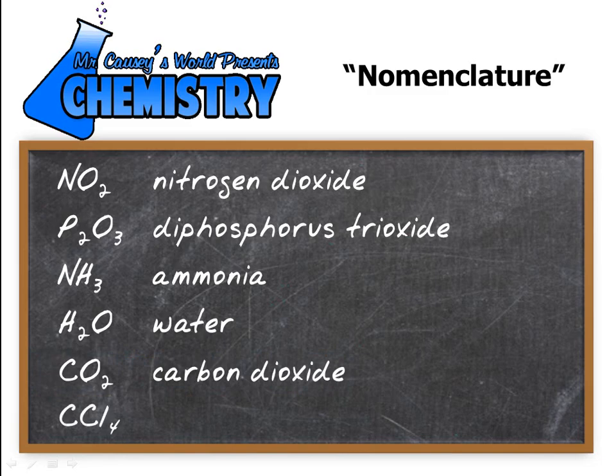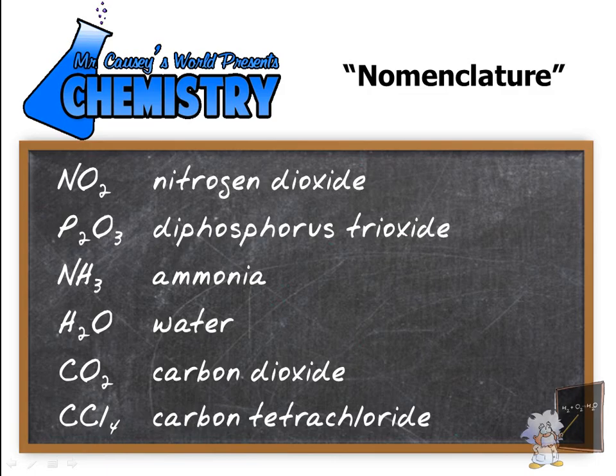And then we have CCl4. We have one carbon, so we write down carbon, and note there are four chlorines — so it's going to be tetrachloride — carbon tetrachloride. And that's all there is to doing covalent compounds. Pretty easy.